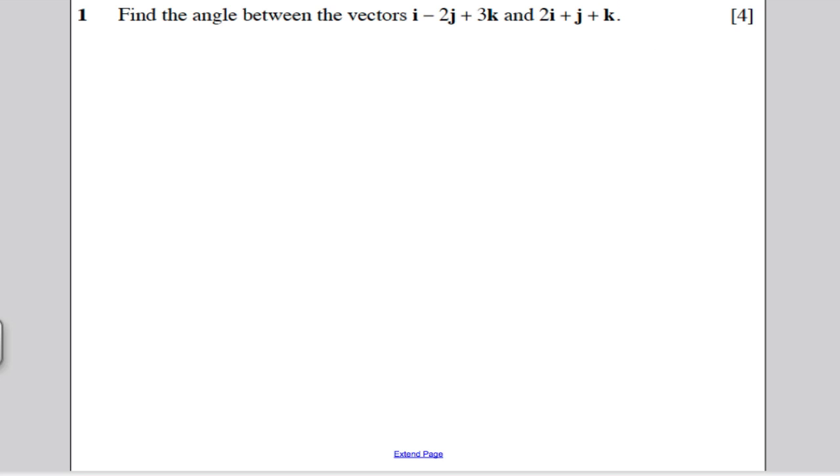How do I ever find the angle between 2 vectors? These are 2 vectors here. Well, I use what's called the scalar or dot product.